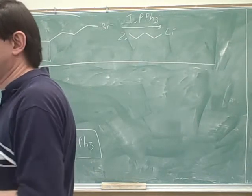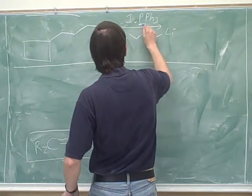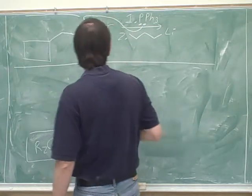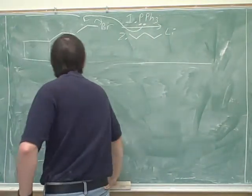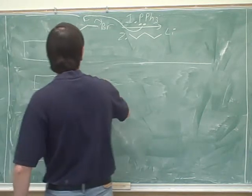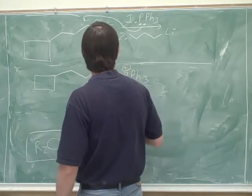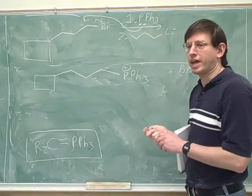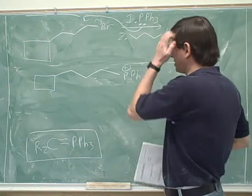Okay, so let's go ahead and see what would happen here. This is to predict the products, but we might as well show the mechanism here for practice. Okay, so from the first step we would get this. Don't forget to put the positive charge on the phosphorus since it started neutral and ends up with a positive charge.